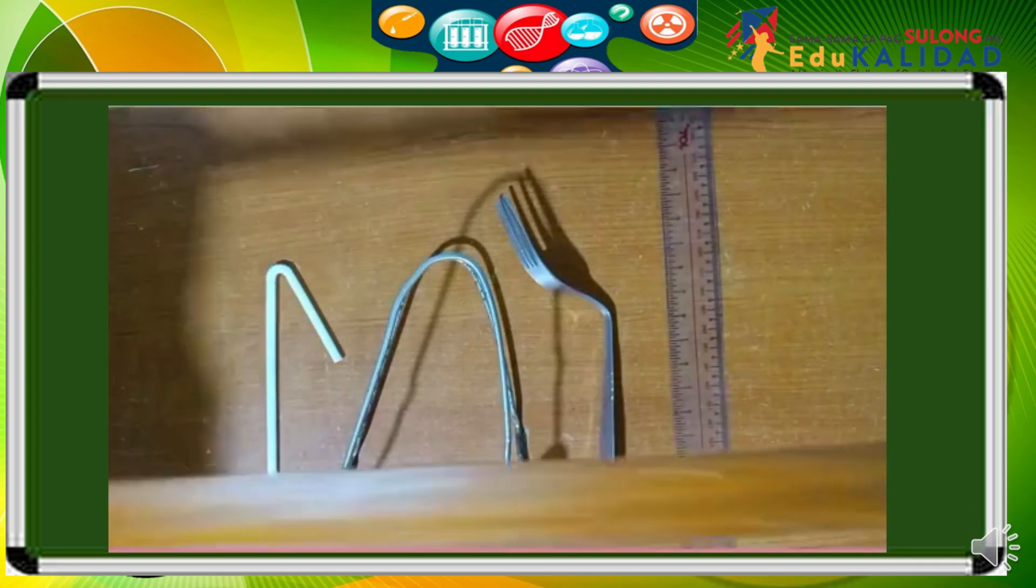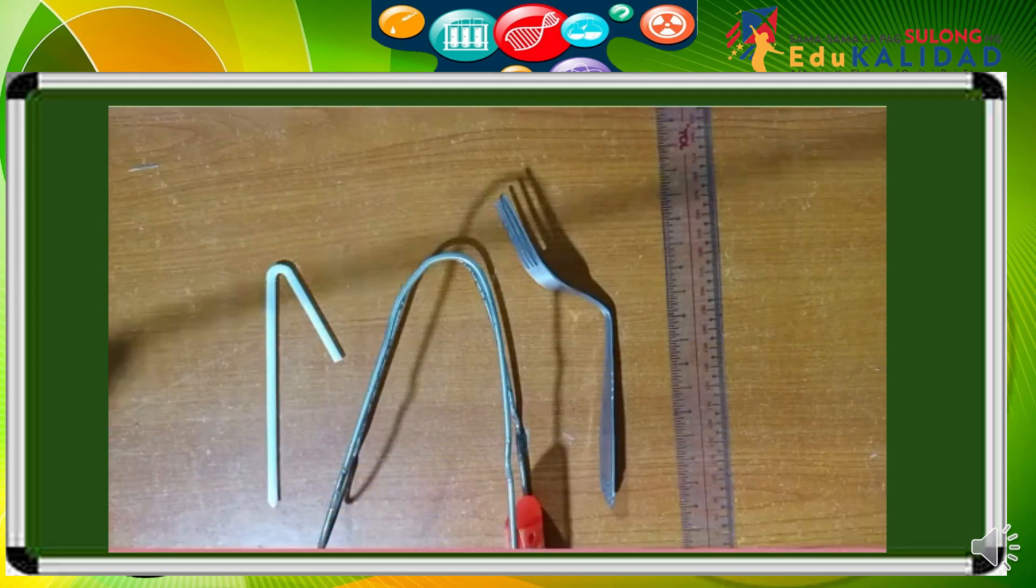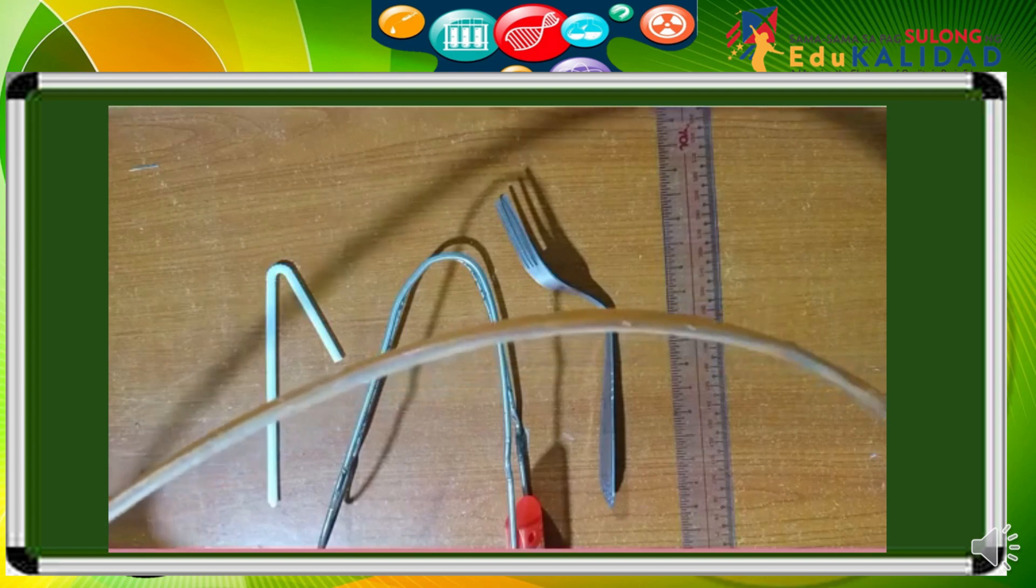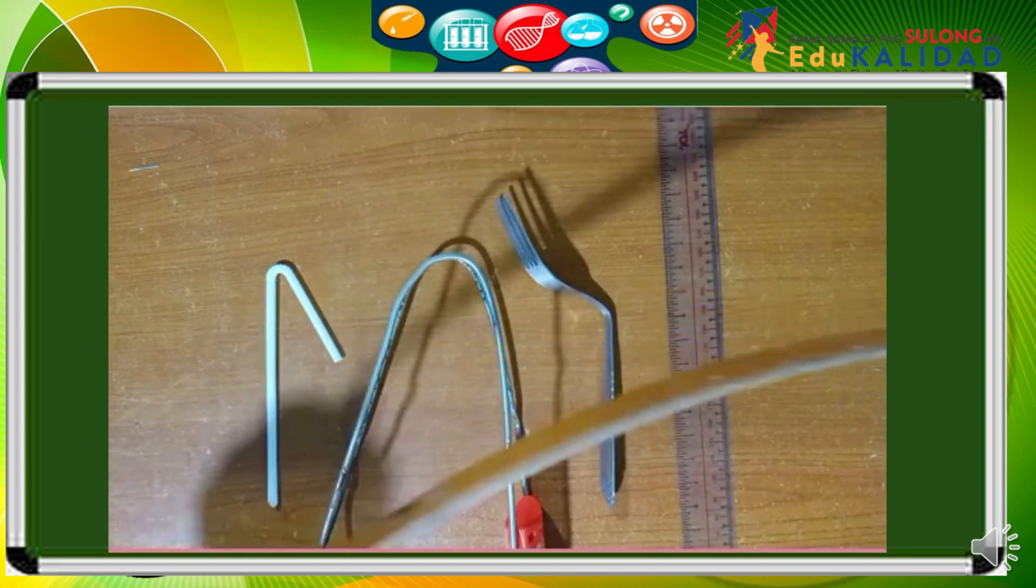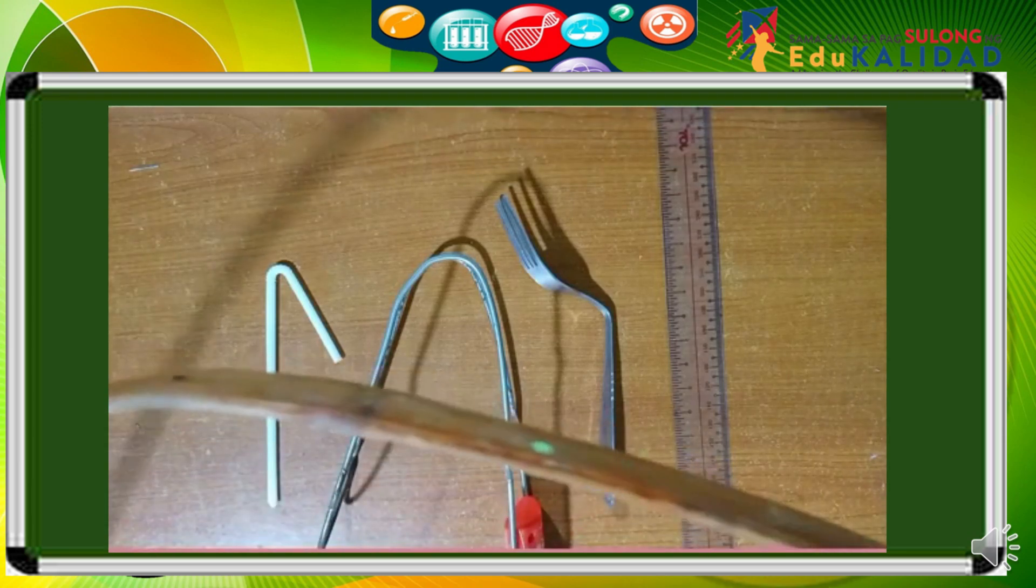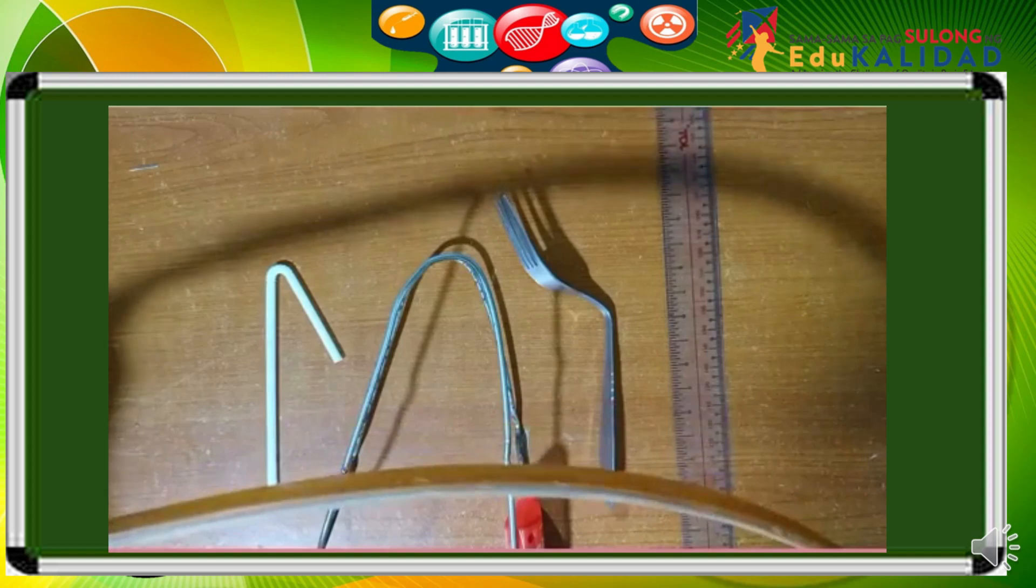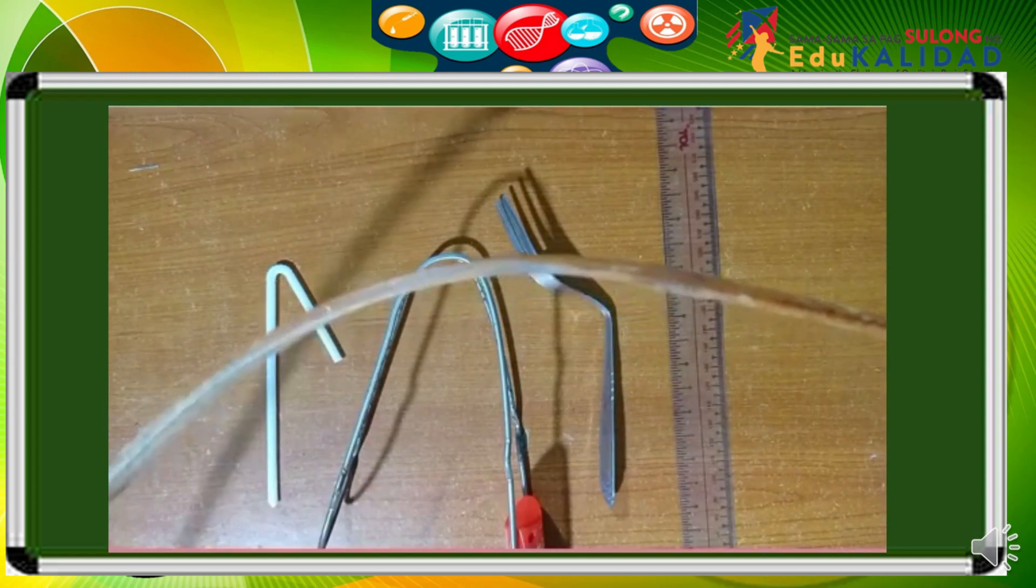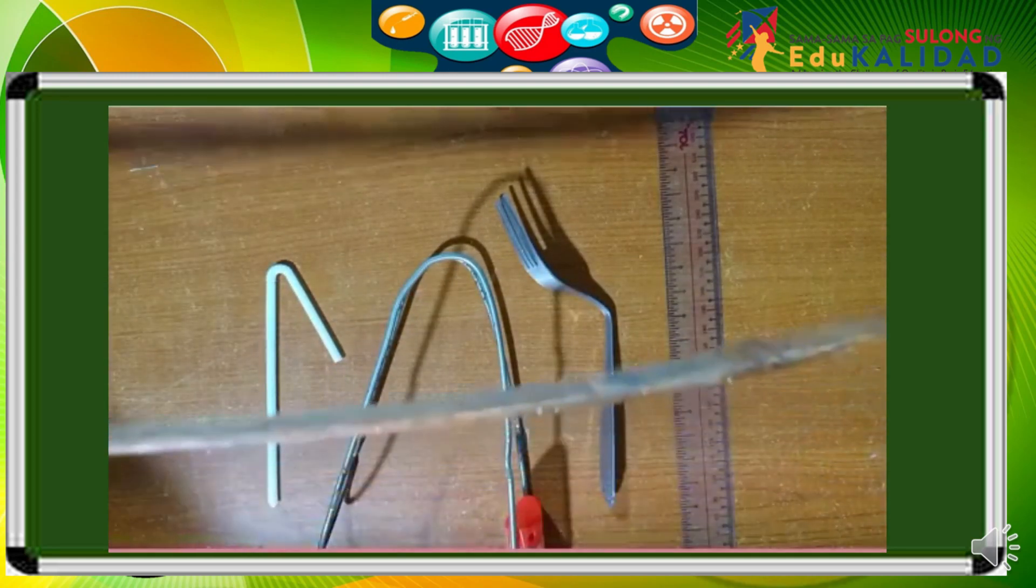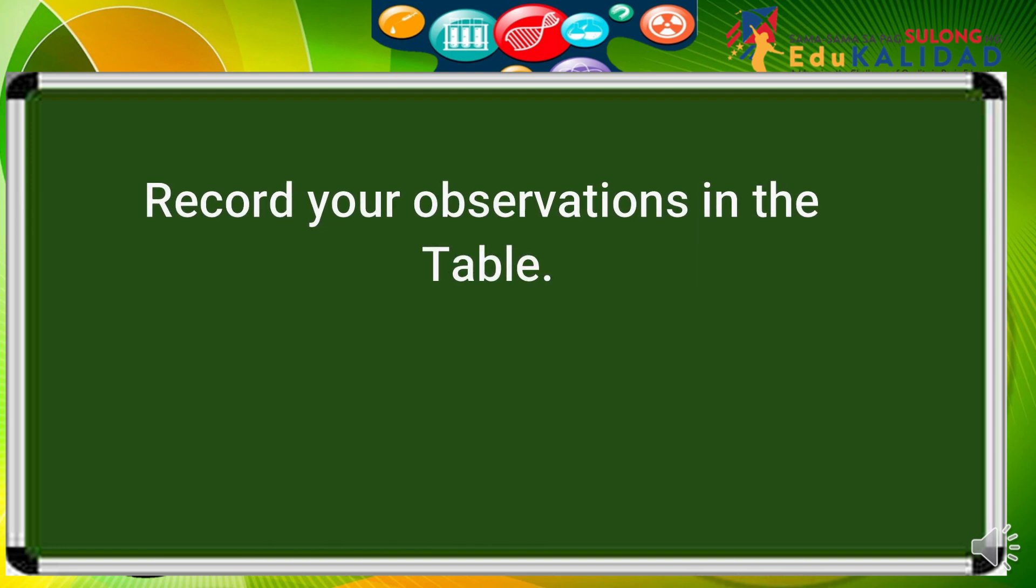Another one is this bamboo stick. Bamboo stick also can be curved, can be bent. When you bend it will turn from straight form into a curved one. You can now record your observation on the observation table on page 4 of your module.